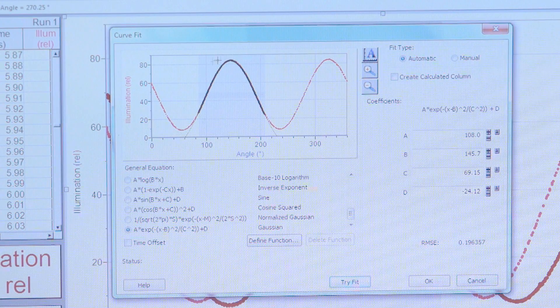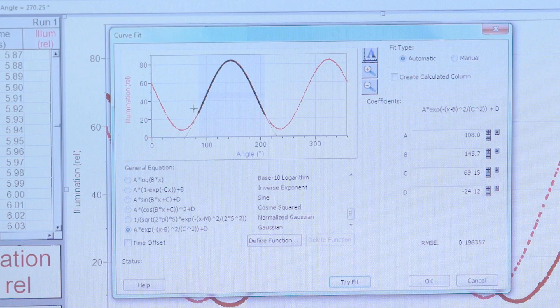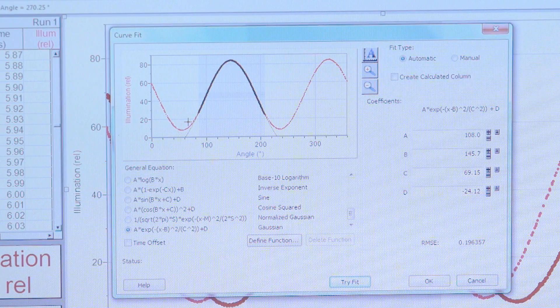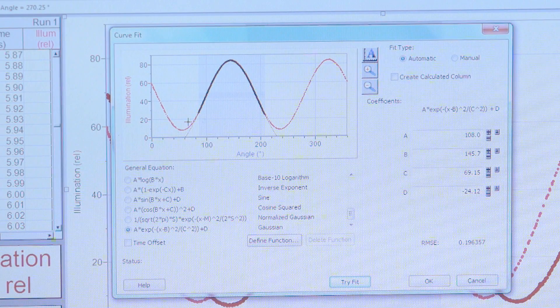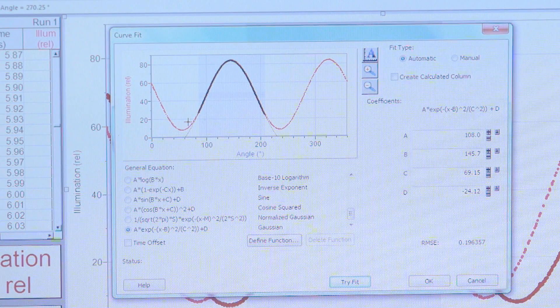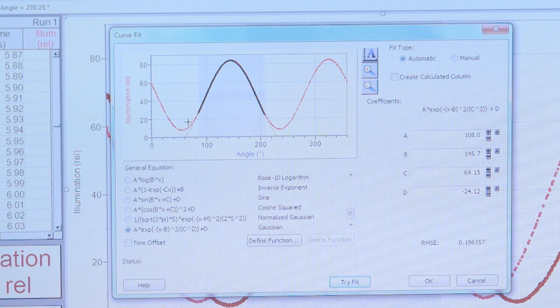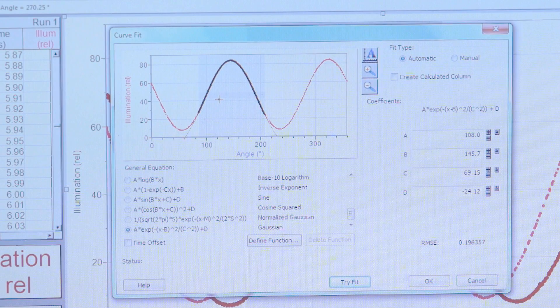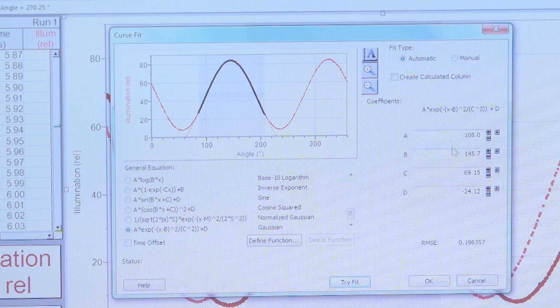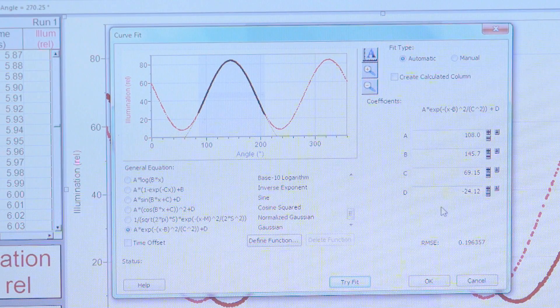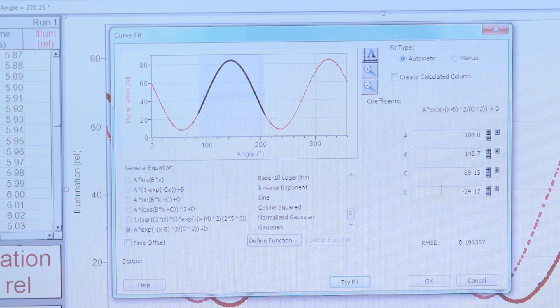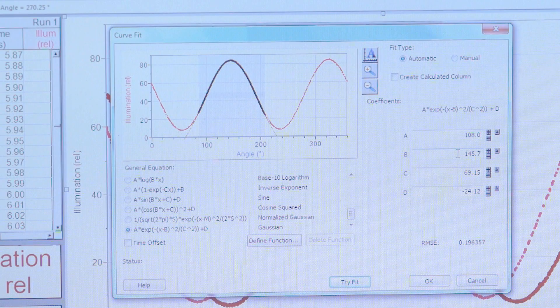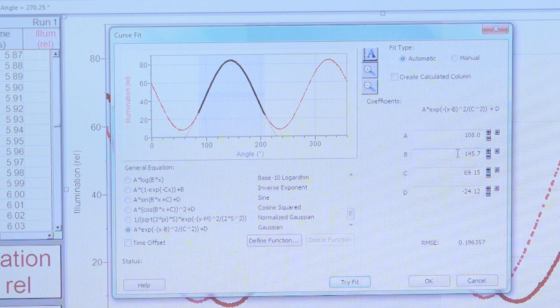Notice in the window here a black curve fitting line has shown up over your waveform. You want to make sure that that black curve matches your data. If it doesn't, restart the curve fit. Since it matches quite nicely in this instance, we're going to look at the coefficients. The coefficient of interest here is the b coefficient. This value gives us the angle at maximum illumination for the blank.